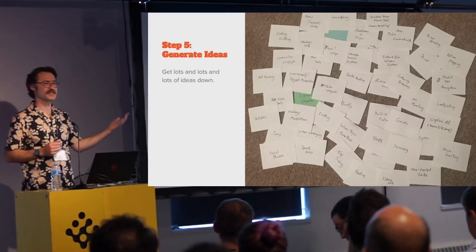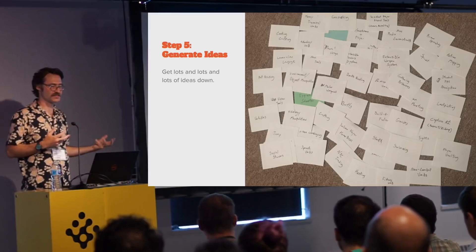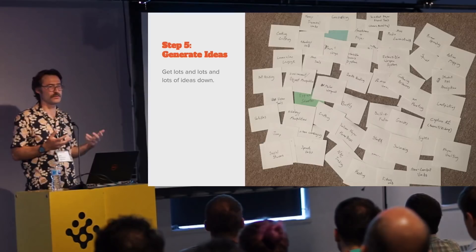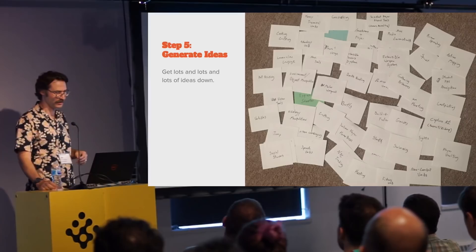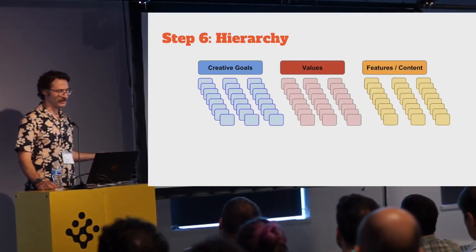Then move on to generating ideas. This is pretty standard brainstorming — capture every idea, feature, desire, goal, anything that anyone in the group wants for the game, not just low-level stuff but mid- and high-level lofty goals. Cast a very wide net, including ideas outside your comfort zone of what you think the project might be. At this point you're just capturing raw material, and it's totally okay to have two mutually exclusive ideas — just stick them both down on cards and move on.